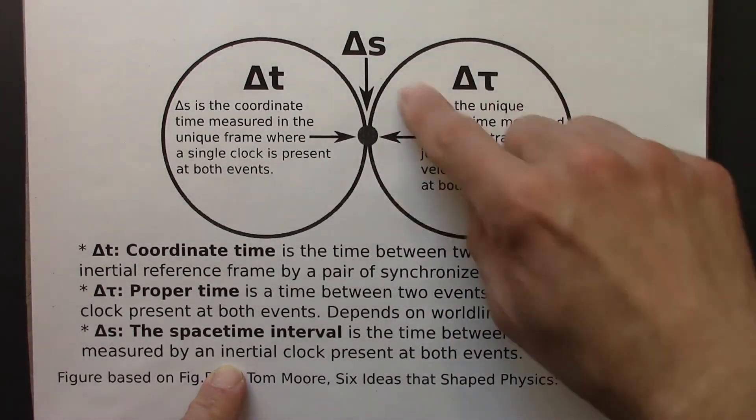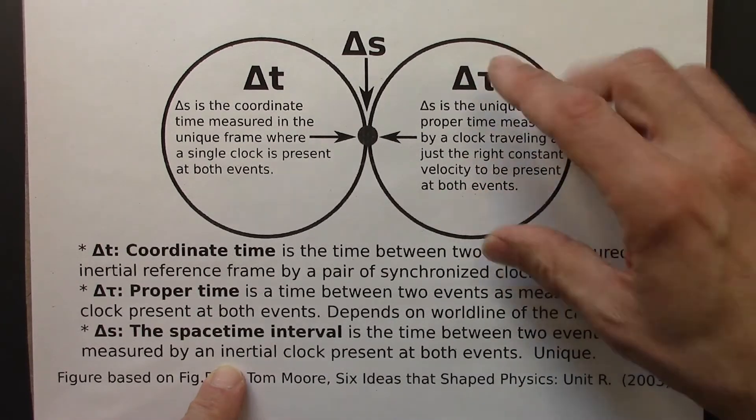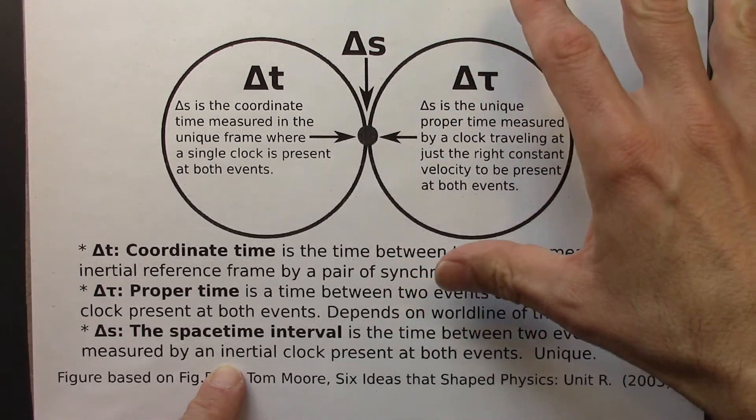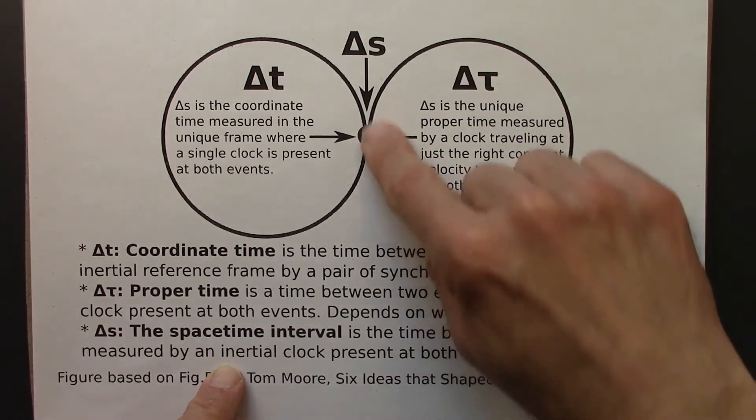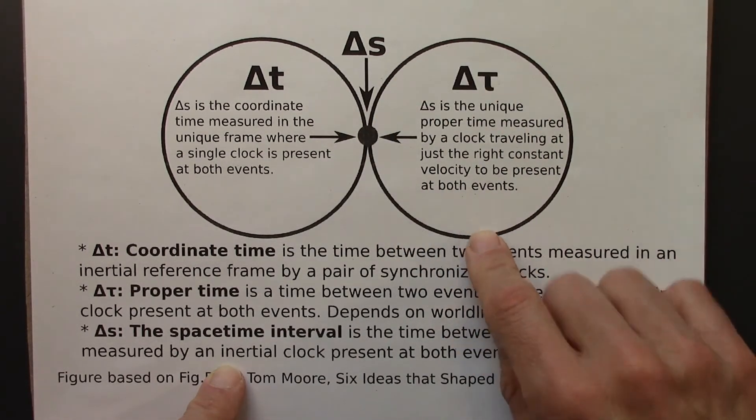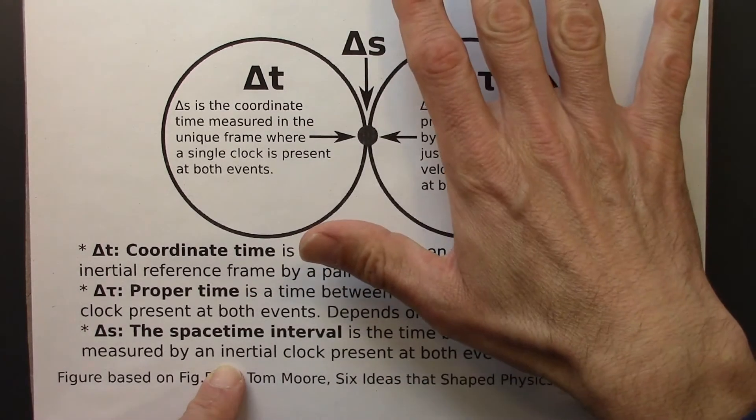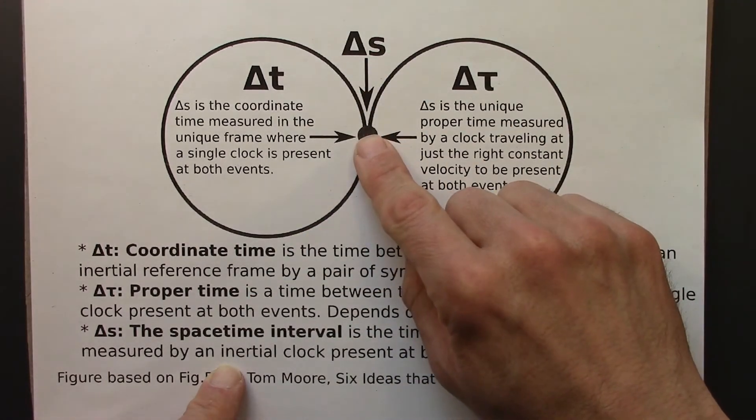And I should mention, this circle is designed just to indicate, yes, there's lots of possible delta tau's. There's not necessarily a circular geometry to this idea. It's just, yeah, there's a blob, lots of delta tau's, one special delta s.